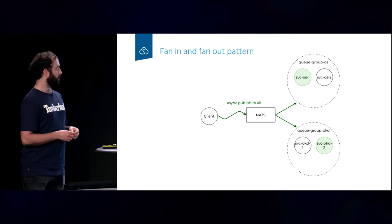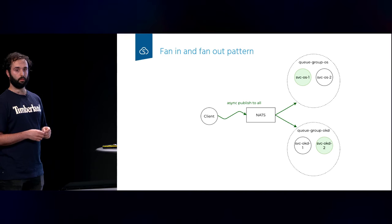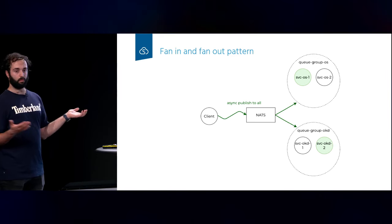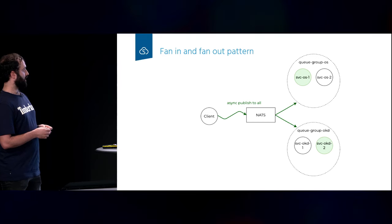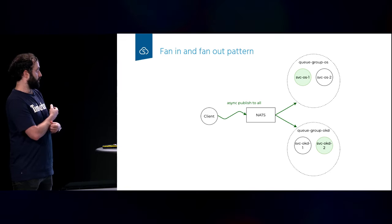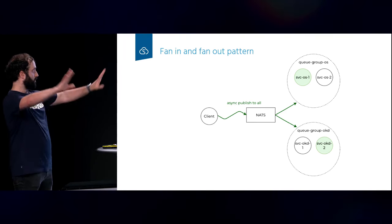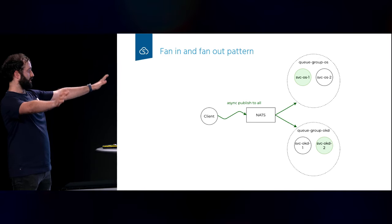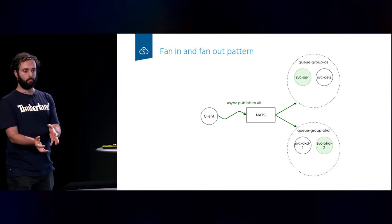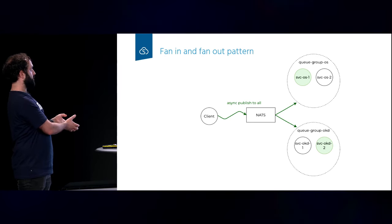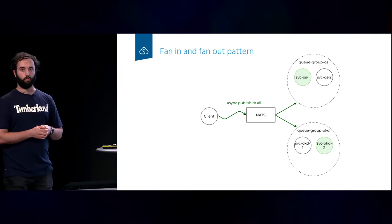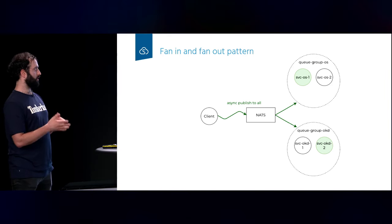This is one of the patterns we have implemented using NATS: the fan-in and fan-out pattern. The client — the HTTP API — does an asynchronous publish to all NATS microservices. Fan-in is the message the client sends, and fan-out is the distribution to those services. Within NATS we have two different queue groups, one for OKD services and one for OpenStack operators. If we deploy more than one replica of these operators, they will automatically be load balanced, allowing us to achieve higher availability.